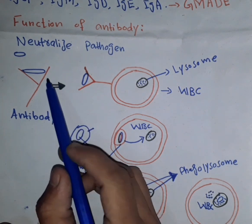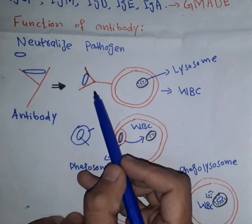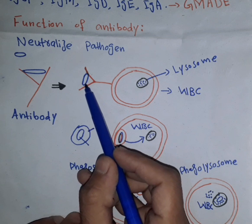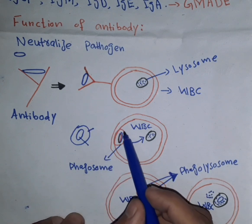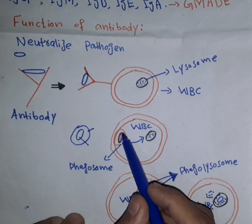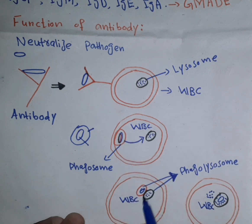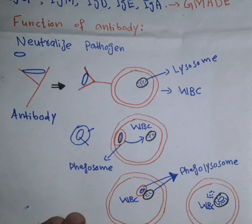The pathogen enters the white blood cells, and the membrane involved is the cell membrane. There is a phagosome, and a structure called the lysosome. The lysosome fuses with the phagosome, and the lysosome contains enzymes. The bacteria or viruses are then converted and destroyed within the body.